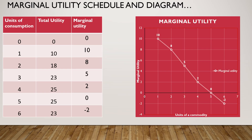Here we have again the marginal utility schedule and diagram. When explaining the Law of Diminishing Marginal Utility, the first thing you need to do is give the statement, then state the assumptions, and then draw the marginal utility schedule and express this schedule in the form of a diagram showing the marginal utility curve.